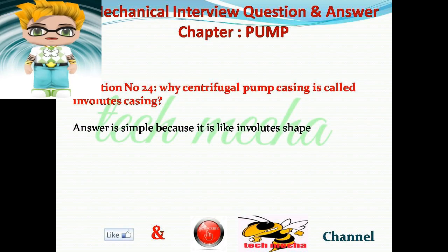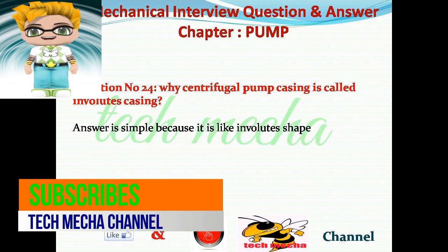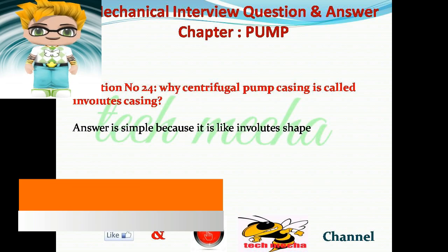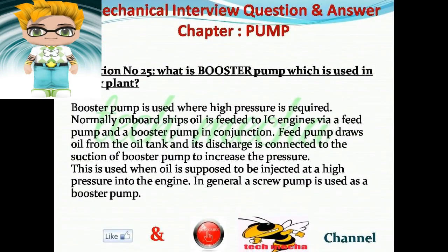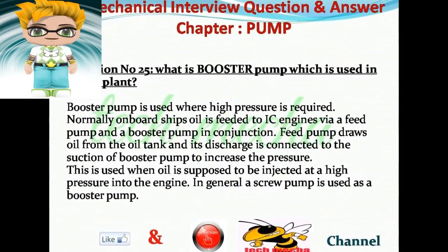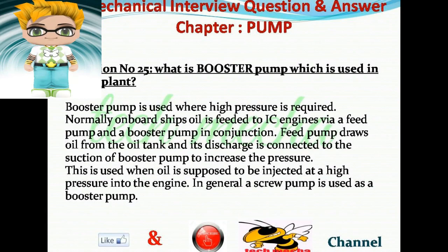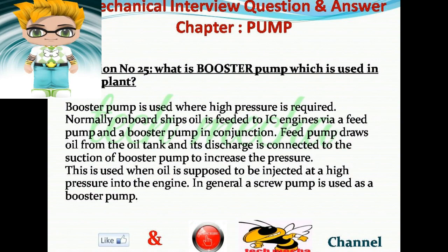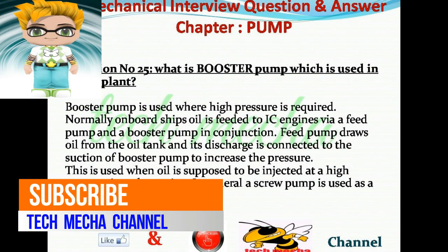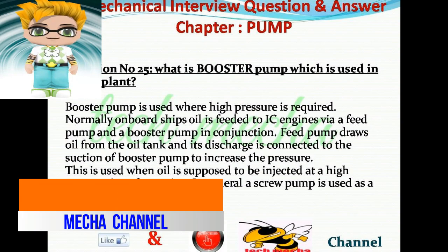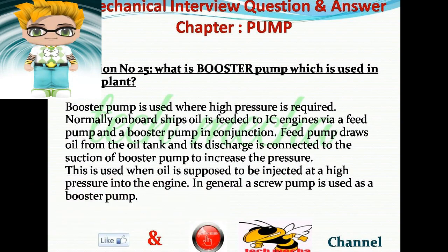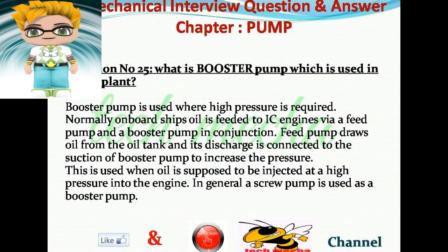Question number 24: Why is the centrifugal pump casing called an involute casing? Answer: Simply because it is like an involute shape. Question number 25: What is a booster pump as used in a power plant? Answer: A booster pump is used where high pressure is required. Onboard ships, oil is fed to IC engines via a feed pump and a booster pump in conjunction. The feed pump draws oil from the oil tank and its discharge is connected to the suction of the booster pump to increase the pressure, used when oil is to be injected at high pressure into the engine.